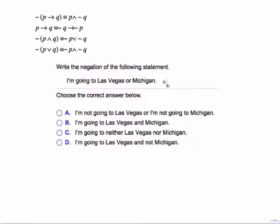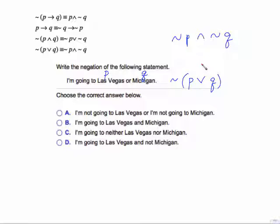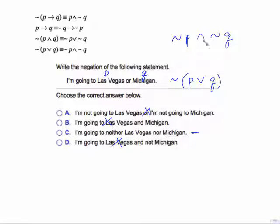Write the negation of: 'I am going to Las Vegas or Michigan.' Las Vegas is P, Michigan is Q. We have P OR Q, and we want the negation. It becomes not P AND not Q: 'I am not going to Vegas and I am not going to Michigan.' Also note that 'neither...nor' is equivalent to NOT...AND NOT — so 'I am going to neither Las Vegas nor Michigan' is equivalent to 'I am not going to Vegas and I am not going to Michigan.'